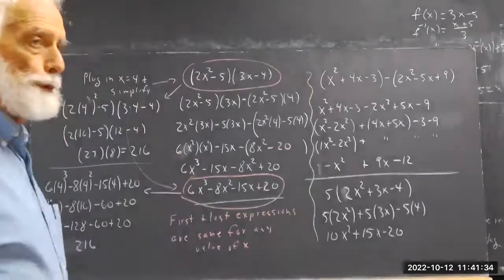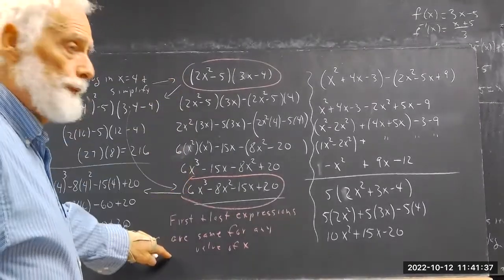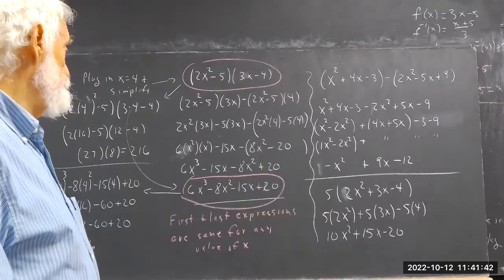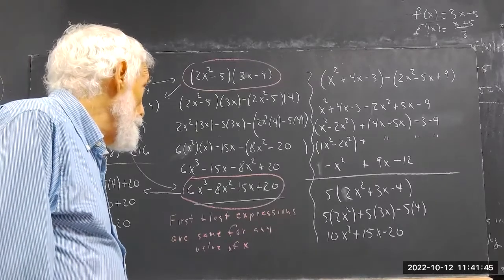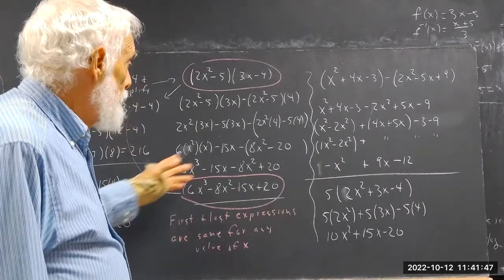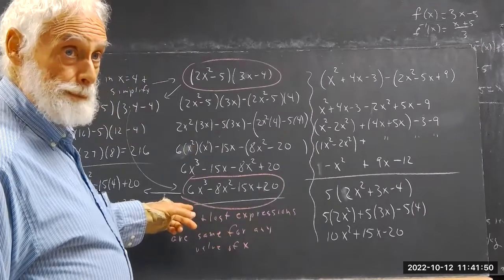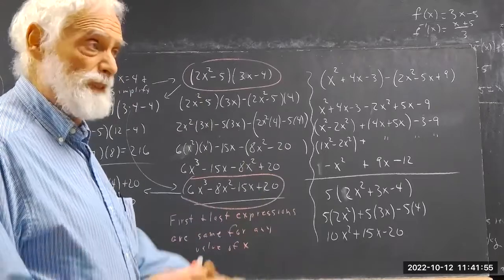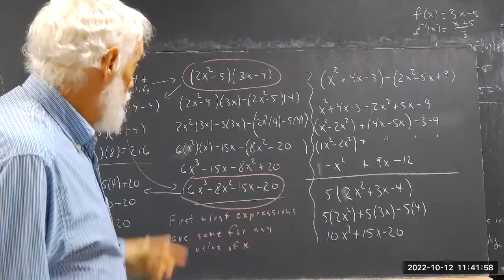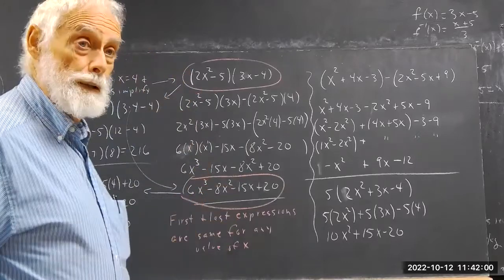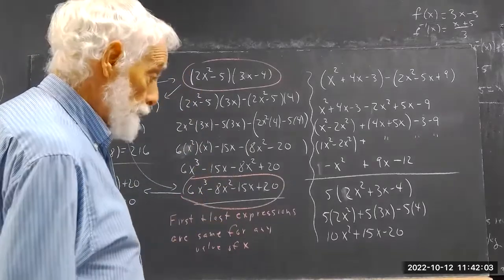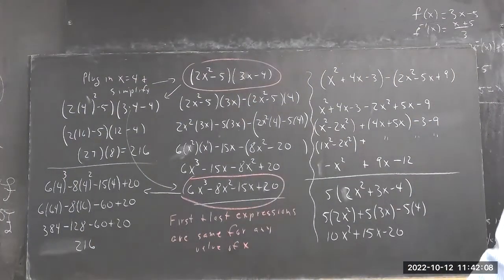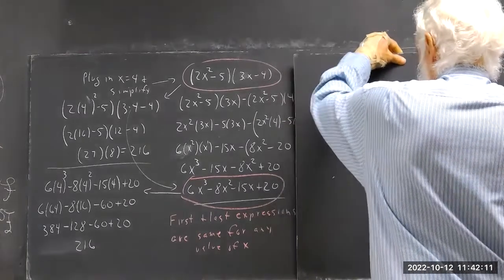If I followed the rules correctly this expression and this expression have to have the same value. If you make an error in any of these steps, you can always check yourself — plug in some random number and use your calculator. If it doesn't work, go back and see where you went wrong. It's real easy to miss a step.